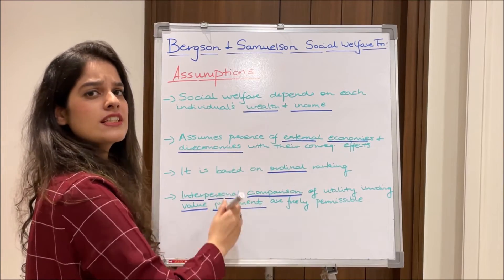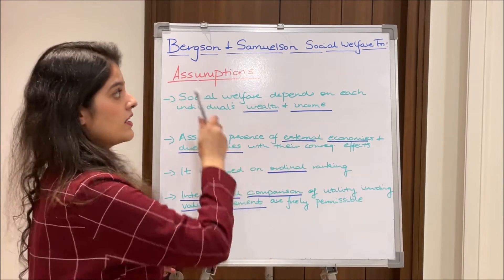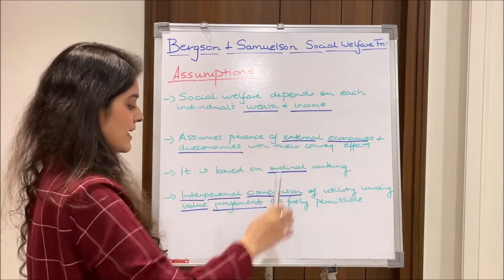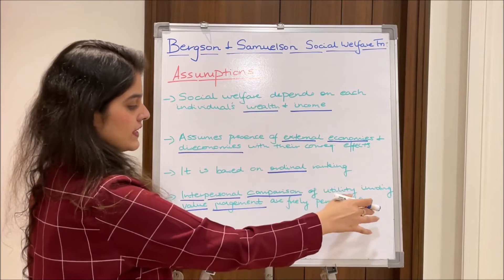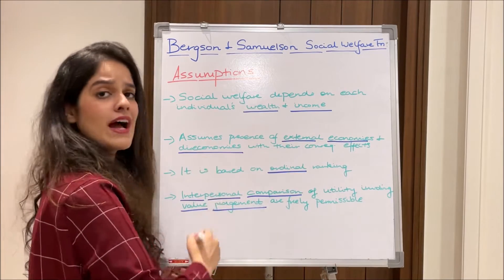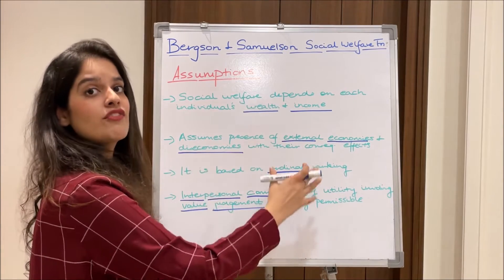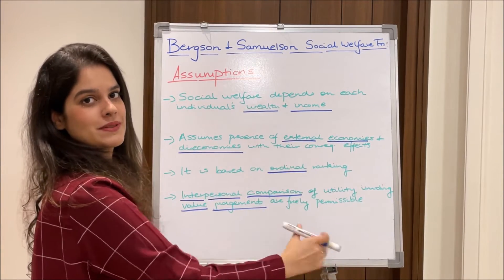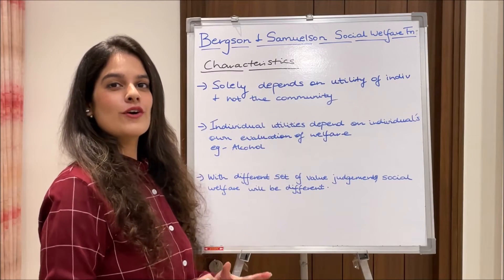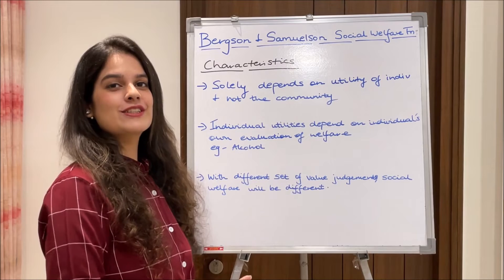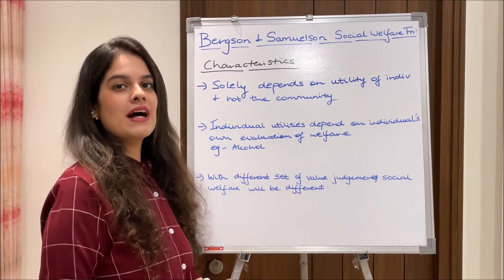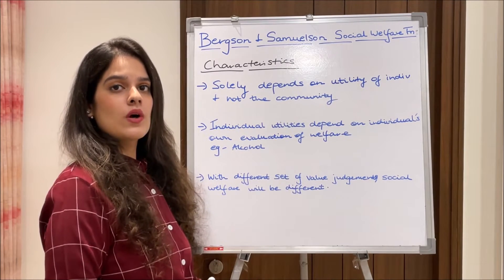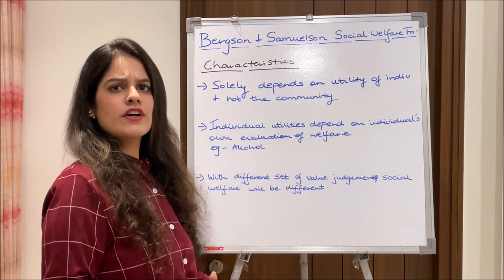Lastly, something very important under this function: interpersonal comparison of utility involving value judgments is freely permissible. Moving on to the characteristics before we get to the graphical part.